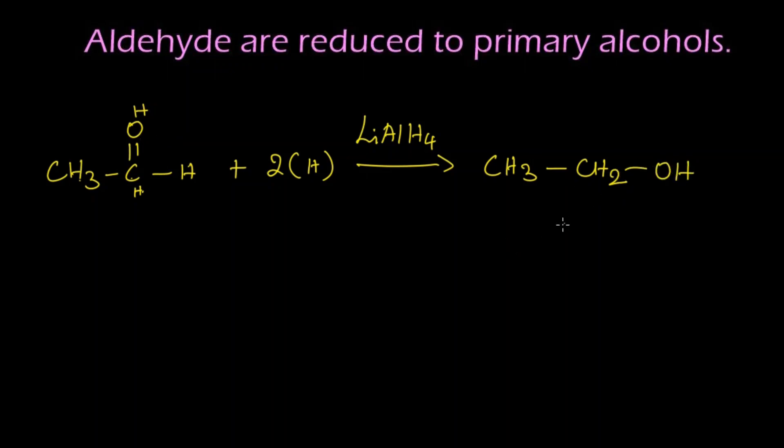What is this? This is called ethanol. So we reduced acetaldehyde into ethanol, which is a primary alcohol. Let's write the name for the structures. This is acetaldehyde.